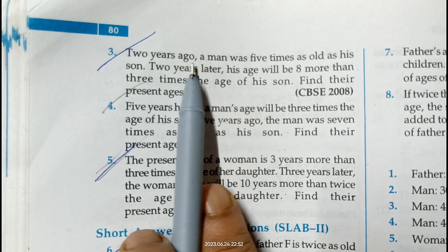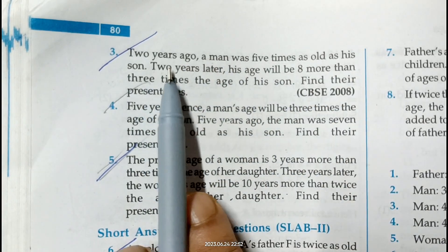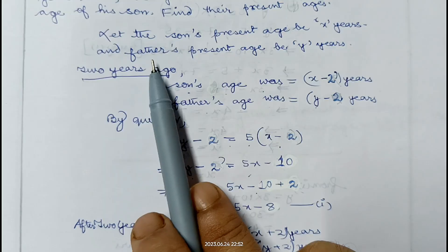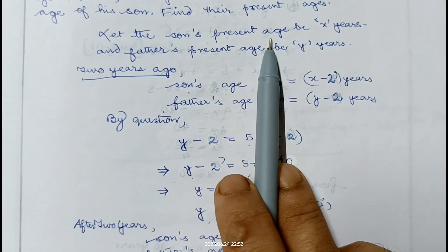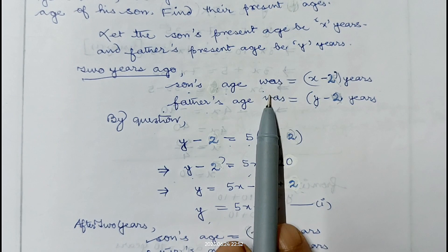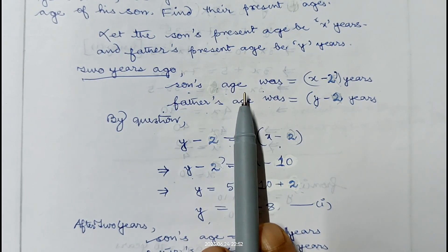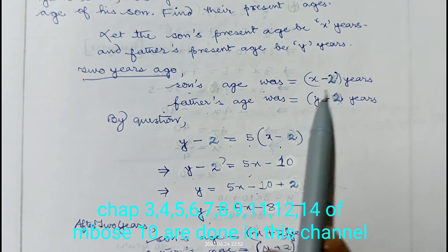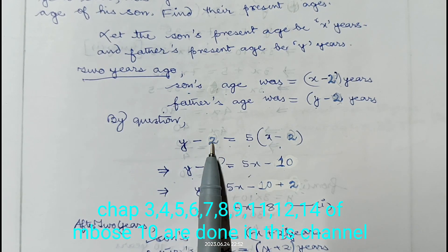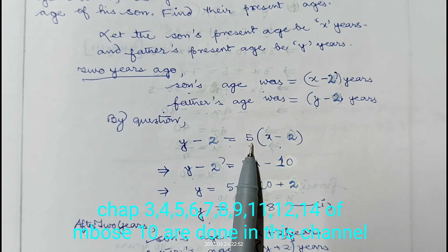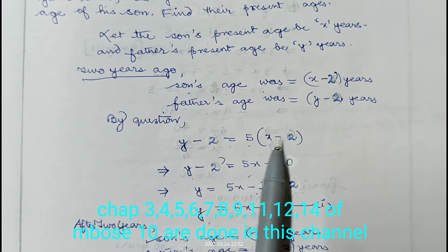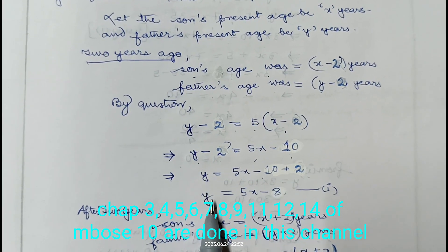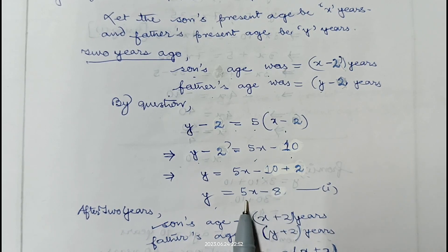In question number 3 it is given: 2 years ago a man was 5 times as old as his son. 2 years later, his age will be 8 more than 3 times the age of his son. Find their present ages. Let the son's present age be x years and father's present age be y years. 2 years ago, son's age was x minus 2 and father's age was y minus 2. Father's age was 5 times son's age, so y minus 2 equals 5 into x minus 2, giving y minus 2 equals 5x minus 10, so y equals 5x minus 8. Let it be equation number 1.